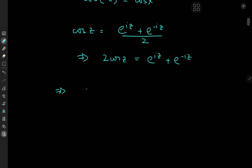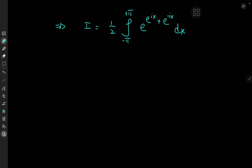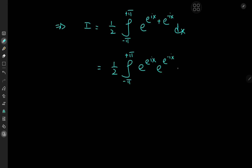This implies that the target integral I can be written as one half the integral from negative pi to positive pi of e to the quantity e to the ix plus e to the negative ix dx. We know how exponential function multiplication works, so we can expand the integrand as a product of two exponential functions: one half the integral from negative pi to positive pi of e to the e to the ix times e to the e to the negative ix dx.